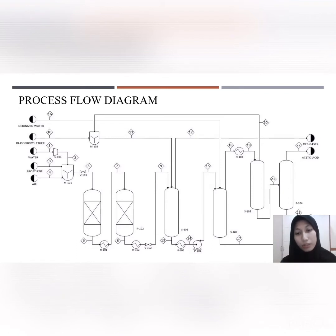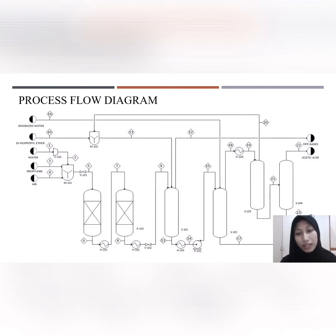The bottom product is transferred to an extractor where acrylic acid and acetic acid are extracted from other components with an extraction efficiency of 89%. The solvent and diisopropyl ether are recycled back to the mixer and absorption column. Finally, at the acid column, acrylic acid is separated from acetic acid and water with a purity of 95%, giving our main product: acrylic acid at 95% purity.